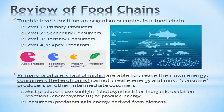To begin this lesson, we will briefly review trophic levels and relationships between trophic levels. Put simply, the trophic level of an organism establishes its position on a food chain. Level 1 consists of primary producers like plants and algae.